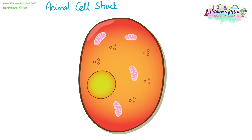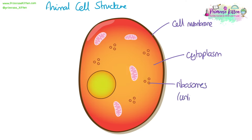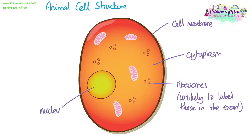Animal cell structure. We need to be able to label a basic animal cell and to know what all the parts do as part of the function of the cell. First up on the outer edge we have the cell membrane, then we have the cytoplasm. These little dots represent ribosomes. You're very unlikely to need to label ribosomes in a diagram in the exam — lots of little dots across the cytoplasm are just representing the cytoplasm.